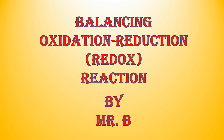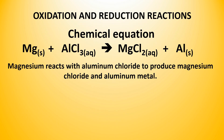Balancing oxidation reduction, or redox reactions. I'm Mr. B. Consider the reaction where magnesium metal reacts with aqueous aluminum chloride to produce aqueous magnesium chloride and aluminum metal.